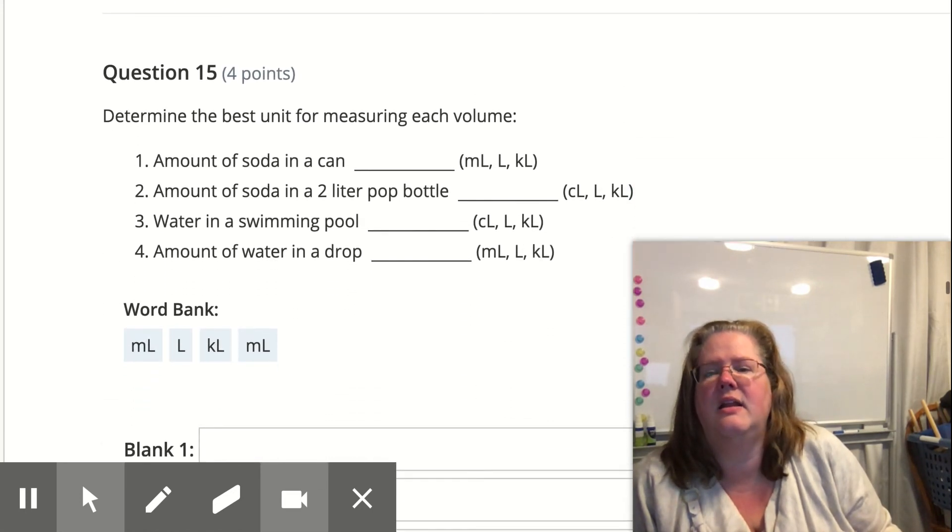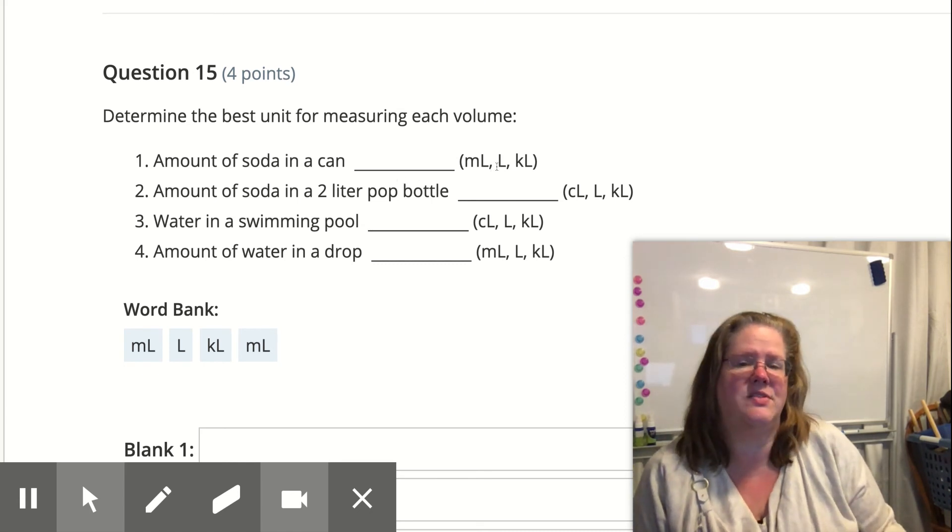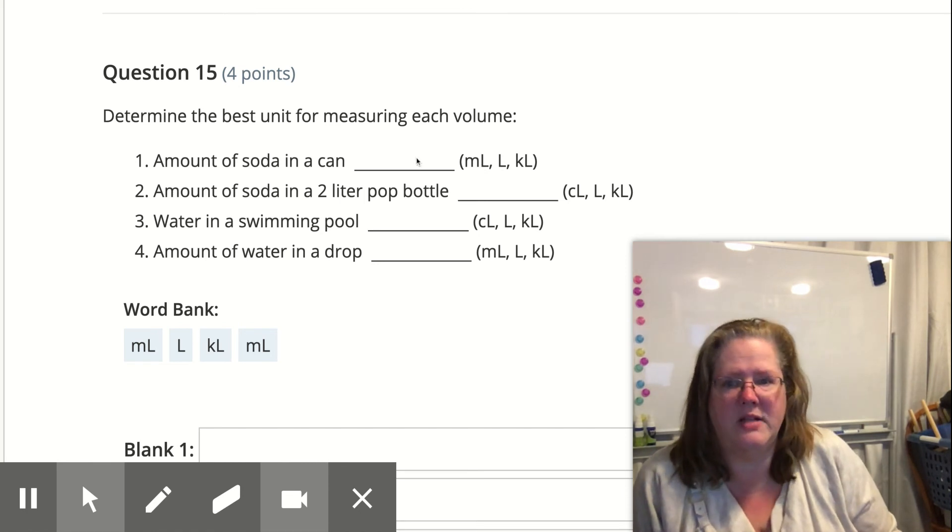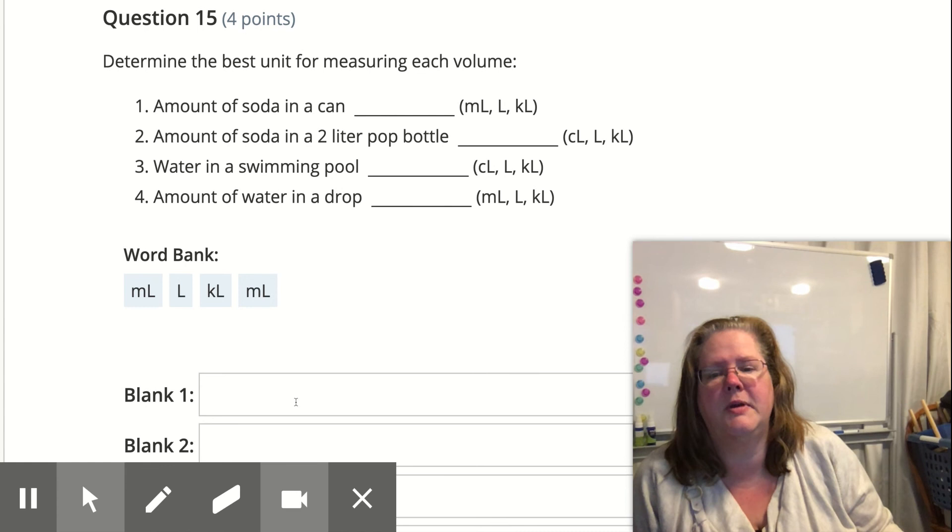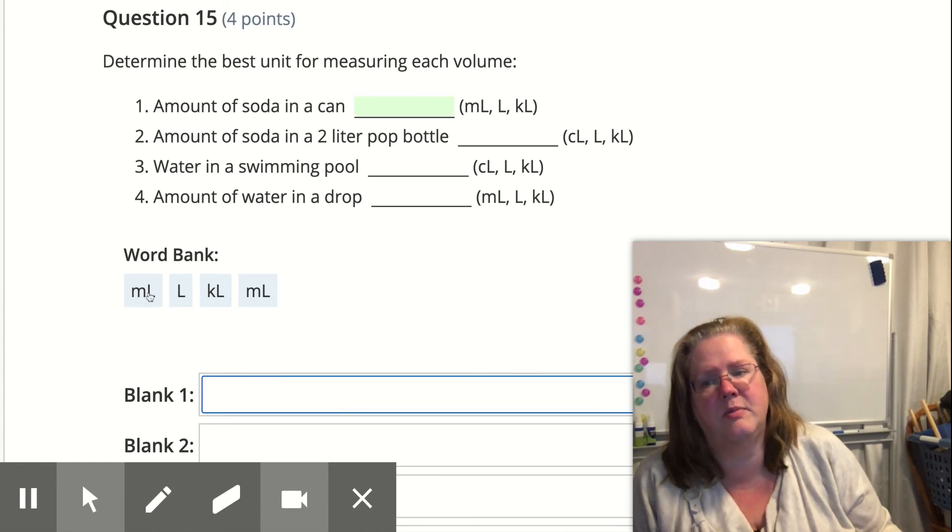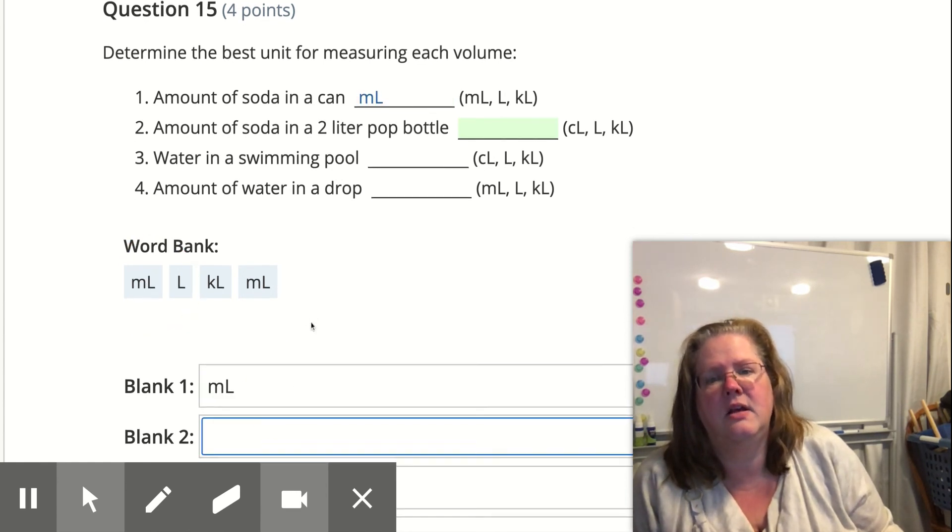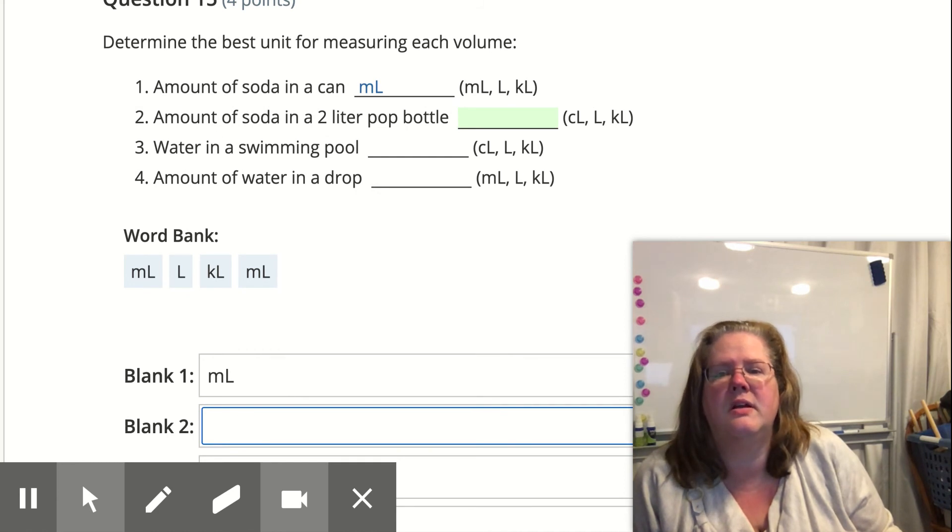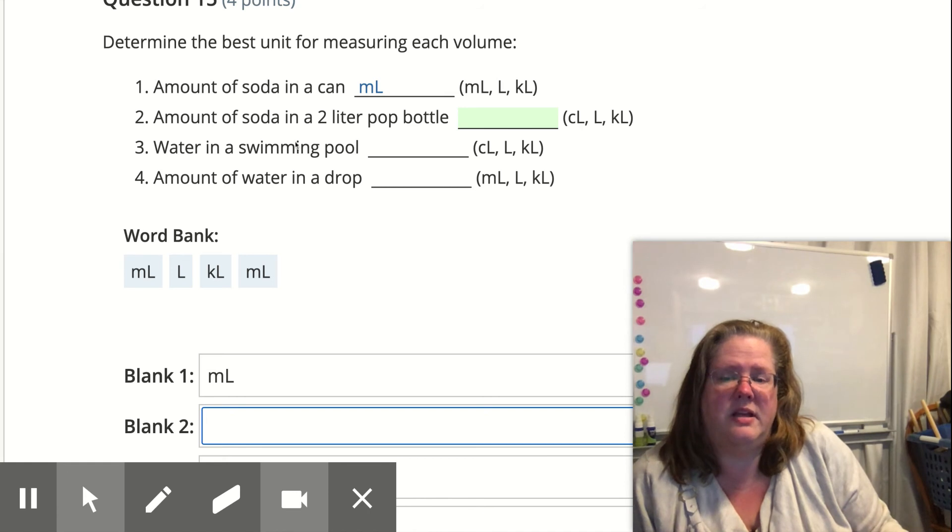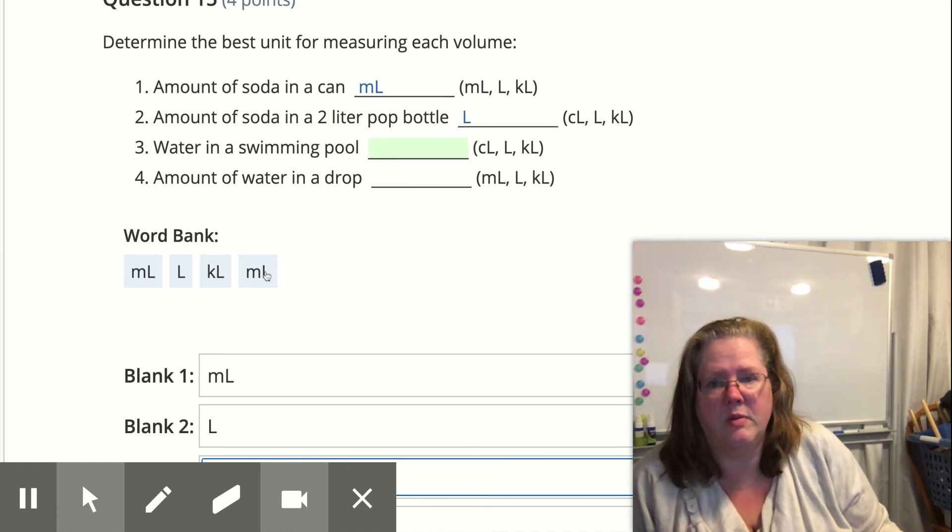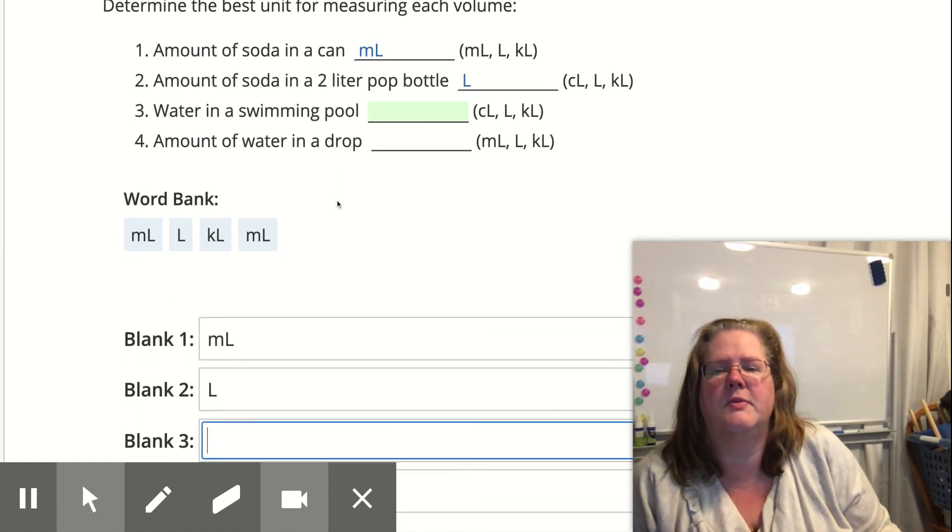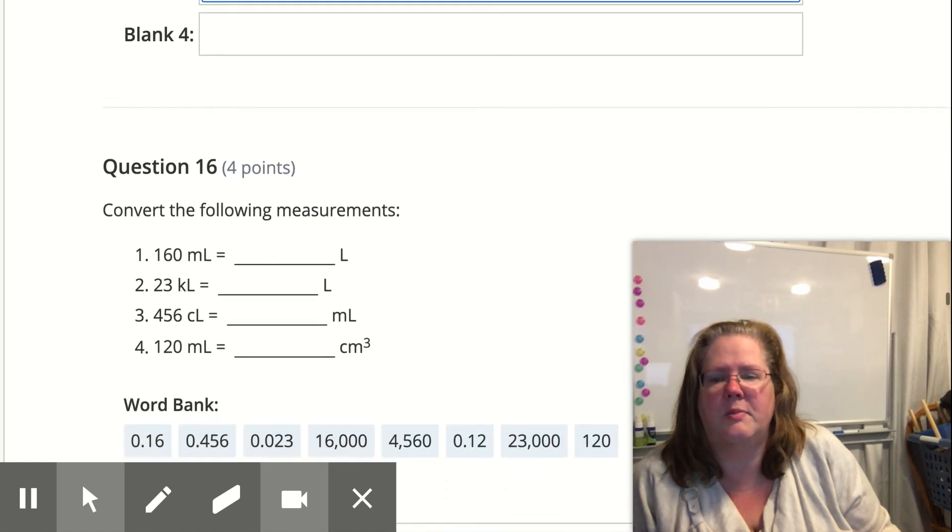All right. So you're going to do that. Then, the volume of soda, how many milliliters or liters? Well, a can of soda isn't a liter of pop, right? So we're probably not going to use liter, but for a can, we're probably going to use milliliters. And we're certainly not going to use a kiloliter because that's a lot. The amount of soda in a two liter pop bottle. That should give you a clue right there. We're using two liters. So it's going to be a liter. You figure out the last two, the volume of swimming pool and the amount of water in an eyedropper.